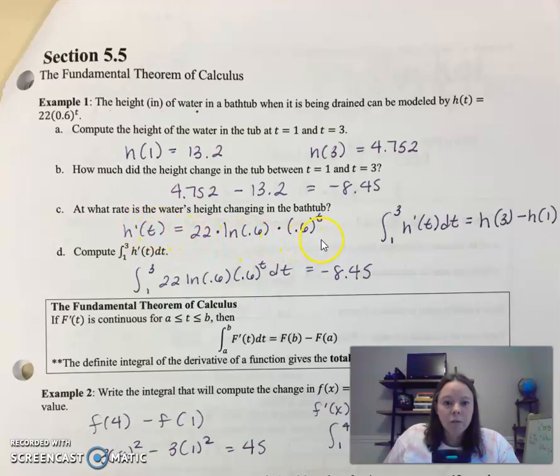So then it says compute the definite integral from 1 to 3, and then I went ahead and put our derivative in there, dt. And if you put this in your calculator, look what it spits out. Gives you the exact same answer we got in part b.